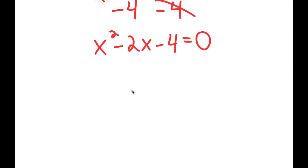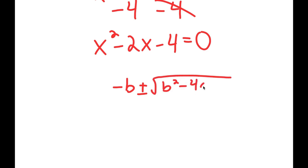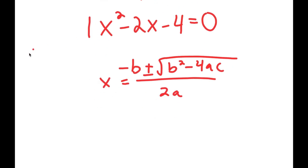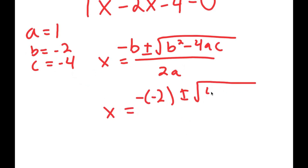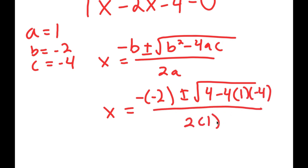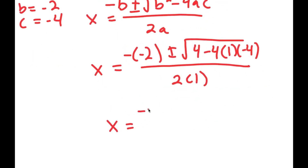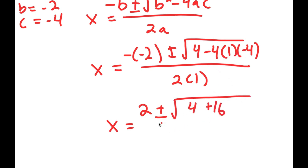Now from here, to solve this I'm going to use the quadratic formula, which is negative b plus or minus the square root of b squared minus 4ac all over 2a. So in this case, a is equal to 1, b is equal to negative 2, and c is equal to negative 4. So I get x is equal to negative of negative 2 plus or minus the square root of negative 2 squared, which is 4, minus 4 times 1 times negative 4, all over 2 times 1. This is equal to positive 2 plus or minus the square root of 4 plus 16 over 2.